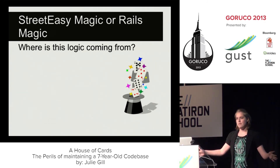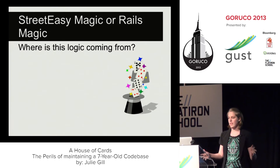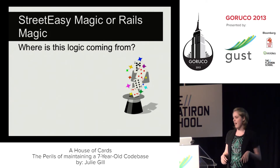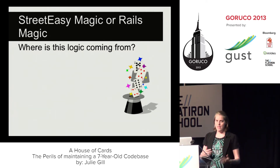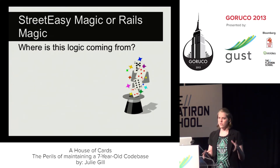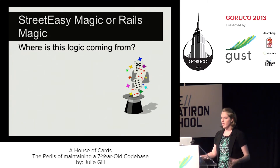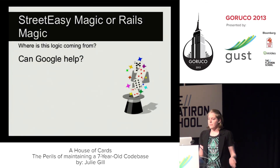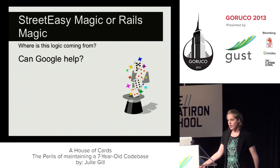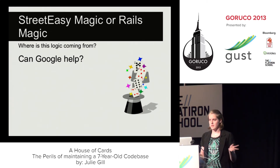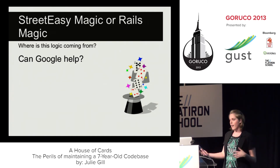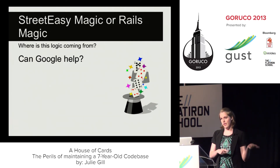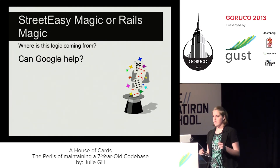So you're in this debugging process and sometimes you come to the point where you're like, where is this logic coming from? I think of this as a game of StreetEasy magic or Rails magic. I'm trying to track down a bug and I run into some unexpected behavior. These magical methods — things that happen behind the scenes that are really useful — can be tricky to track down. The questions you're asking are: who is doing this, where is this coming from, what is this? Can Google help? Not sure. Google helps you avoid asking dumb questions of your coworkers, but if you can't find it on Google, that's a clue it might be StreetEasy magic — something your coworkers wrote in the past that you now have to find and deal with.